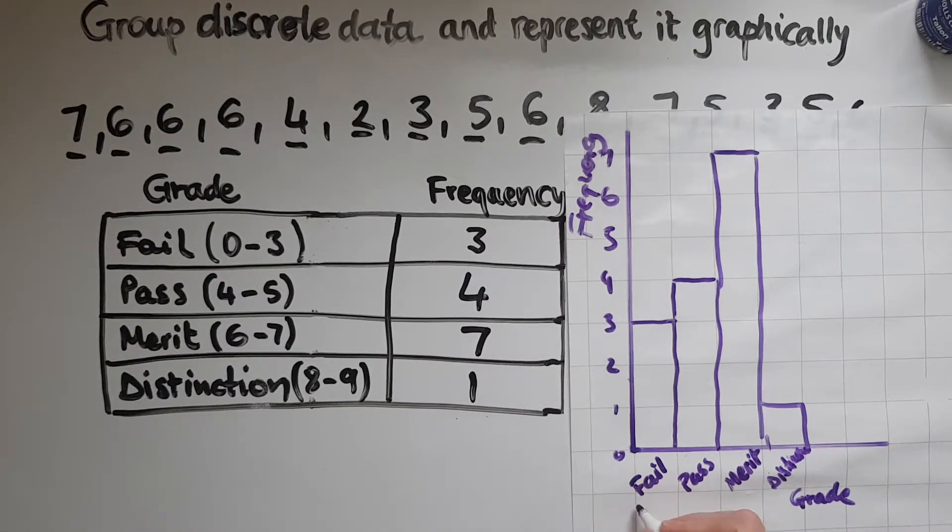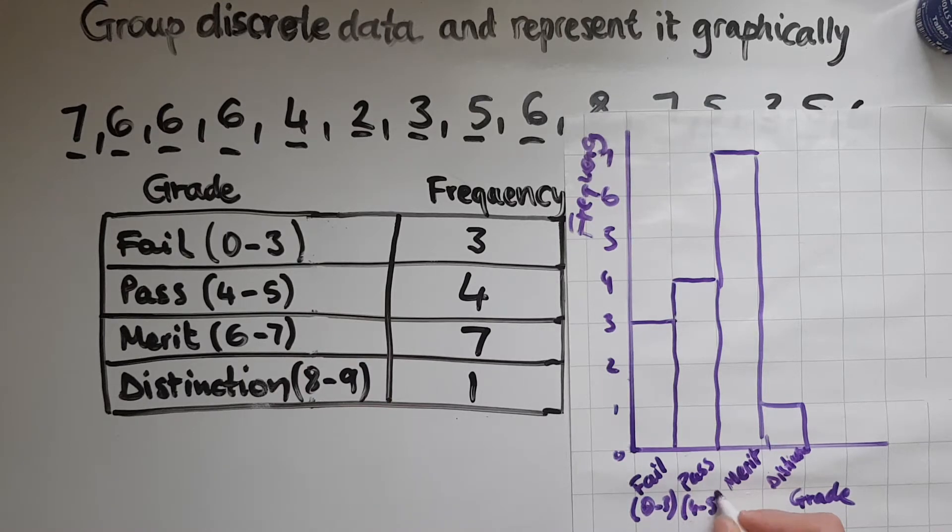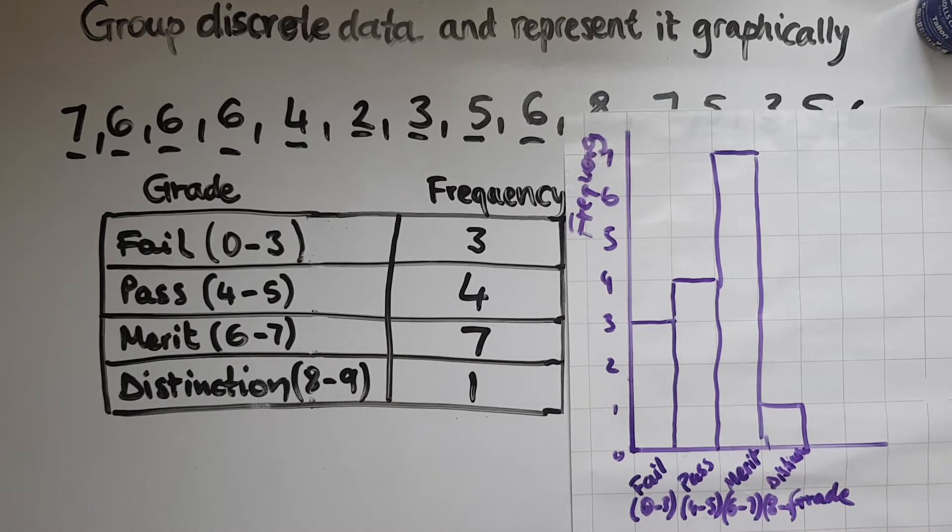And then I'd put marks from 0 to 3. So 0 to 3. And then here it'd be 4 to 5, 6 to 7, 8 to 9. But either way is perfectly fine.